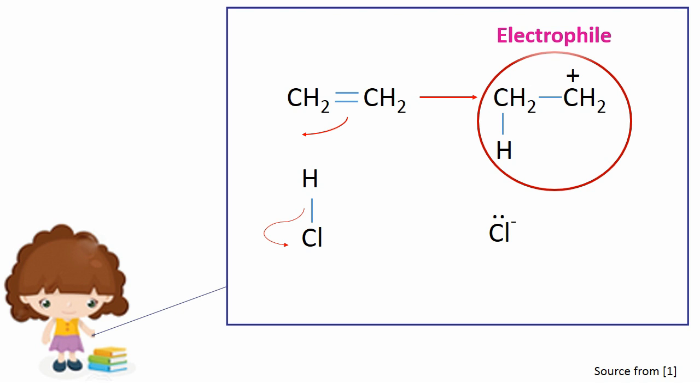The electrophile is CH3CH2+. The chloride ion reacts with aluminium chloride to form an AlCl4- ion.